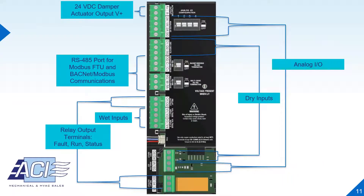This is the digital and analog control circuit terminal layout for the control board. It has a damper, so when the VFD receives a run signal, it can send power out and once the damper is open, the VFD will tell the motor to run. There are also dry and wet inputs along with configurable relay outputs, BACnet and Modbus communications, and analog inputs and outputs.